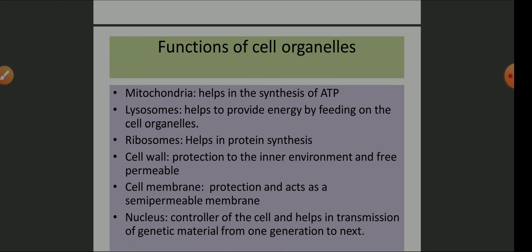Cell wall provides protection of the inner environment and is freely permeable, allowing all molecules and ions to move to and fro. Cell membrane provides protection and acts as a semi-permeable membrane — semi-permeable means selective in nature, allowing only certain molecules and ions to move in and out of the cell. Nucleus is one of the most important cell organelles because it acts as a controller and helps in the transmission of genetic material from one generation to the next.